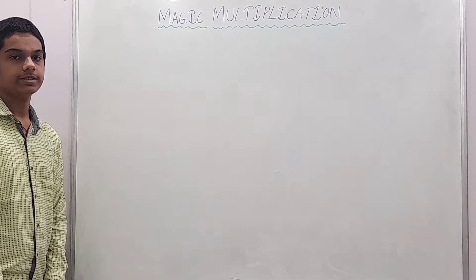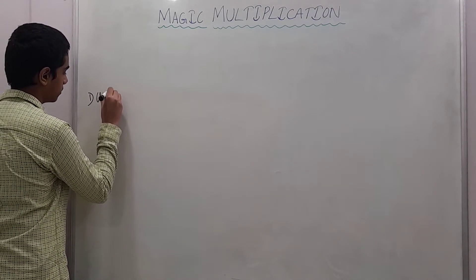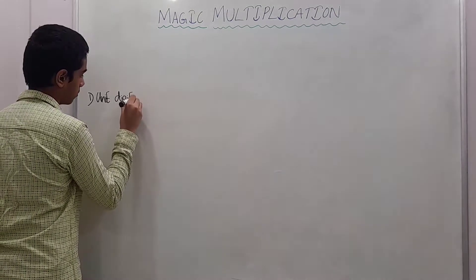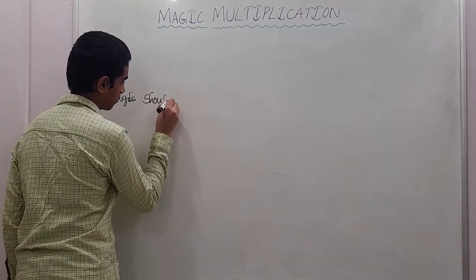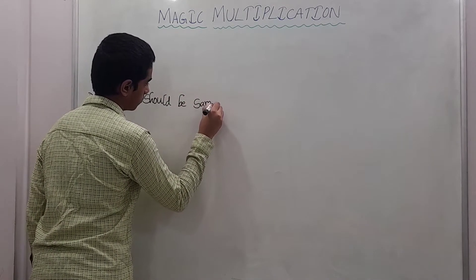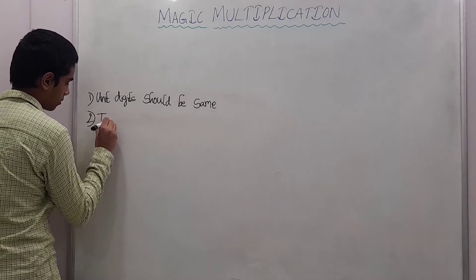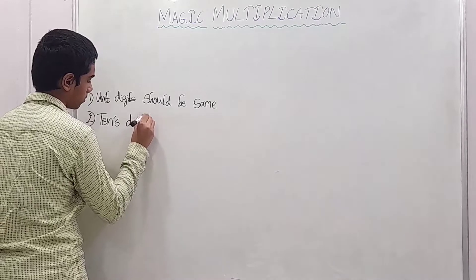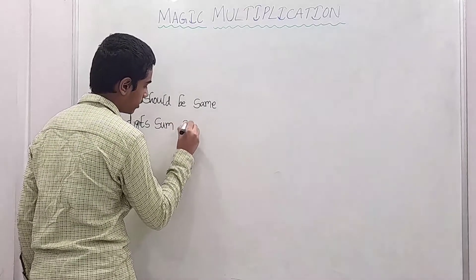To do magic multiplications, there are two rules. First rule: unit digits should be same. Second rule: the 10th digit sum should be equal to 10.